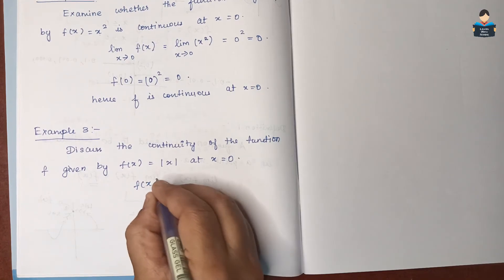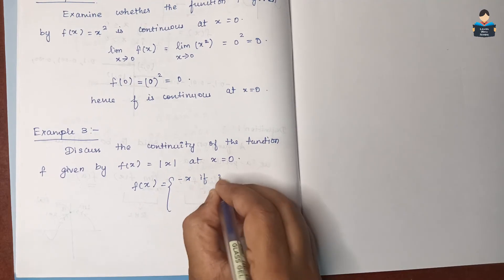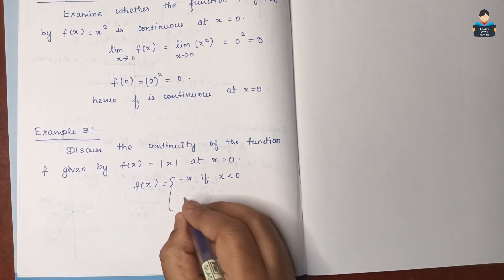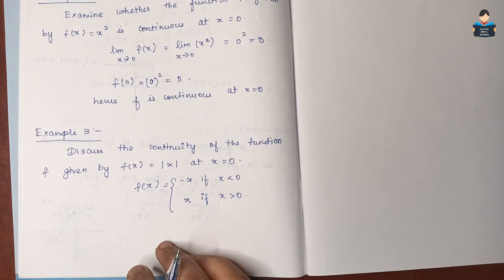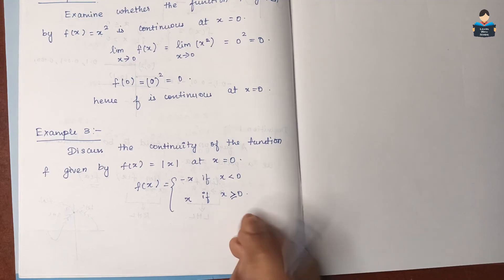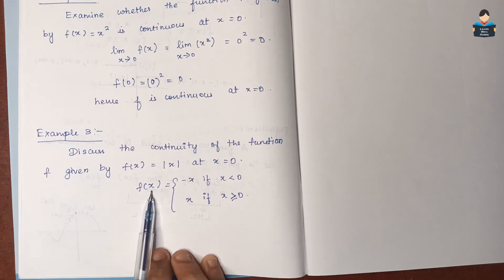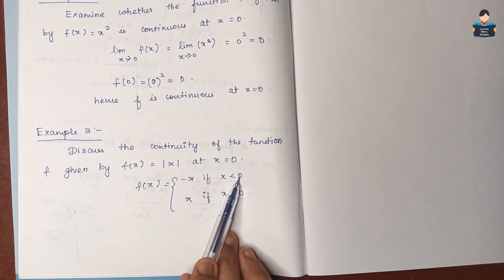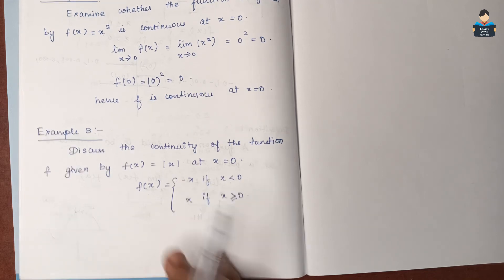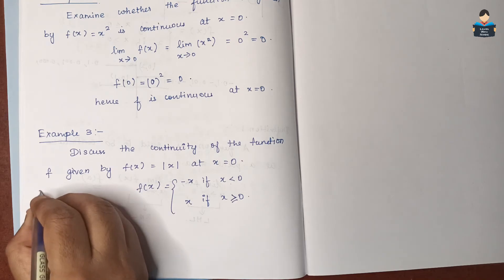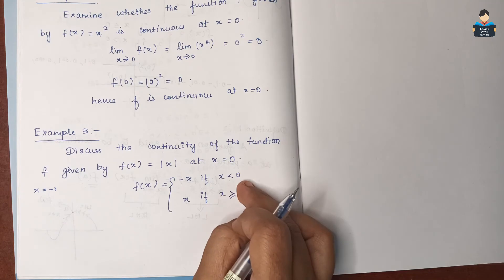f(x) = −x if x < 0, and f(x) = x if x ≥ 0. So, for example, if x = −1 (which is less than 0), we apply the condition x < 0.